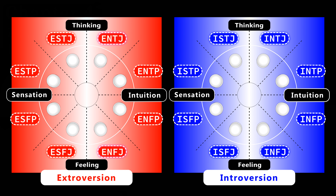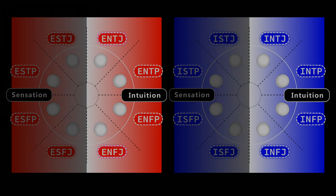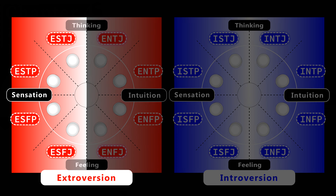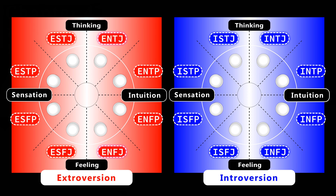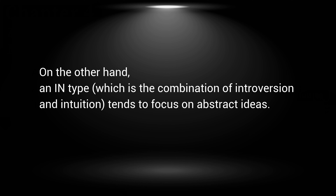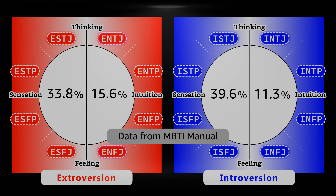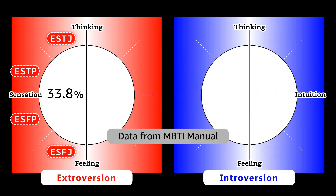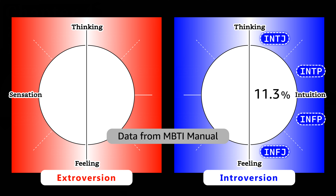In terms of sensation and intuition, the former represents yang and the latter represents yin. Therefore, in terms of totality, the yang quality is represented by the combination of extroversion and sensation, and the yin quality is represented by the combination of introversion and intuition. An ES type — the combination of extroversion and sensation — tends to focus on concrete experiences in the physical world. On the other hand, an IN type — the combination of introversion and intuition — tends to focus on abstract ideas. In terms of population, the ES combination is 33.8% and the IN combination is 11.3%.